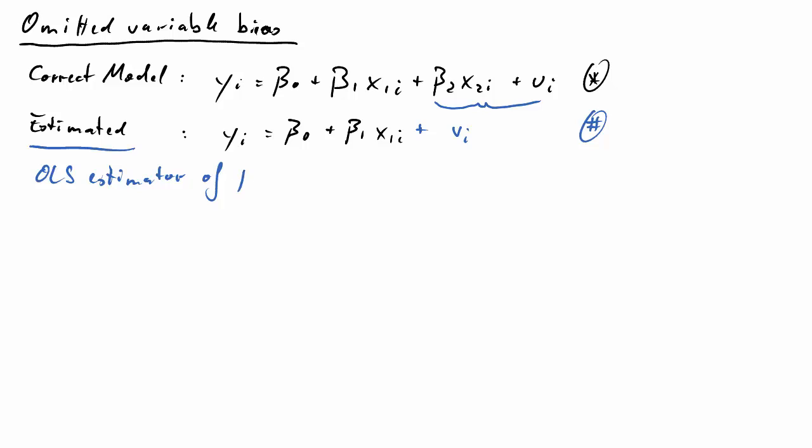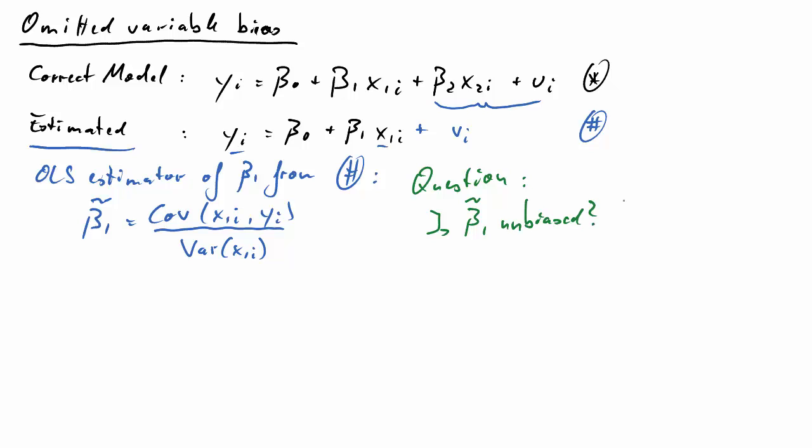So if we estimate this model by OLS, we know that the OLS estimator for beta 1 is going to look like this: beta 1 tilde (I call it tilde to indicate it's from a misspecified model) is covariance between x1 and y divided by the variance of x1. So the question is now, is beta tilde 1 an unbiased estimator? Is the expected value of beta 1 tilde equal to beta 1 if the correct model is indicated by the asterisk equation?